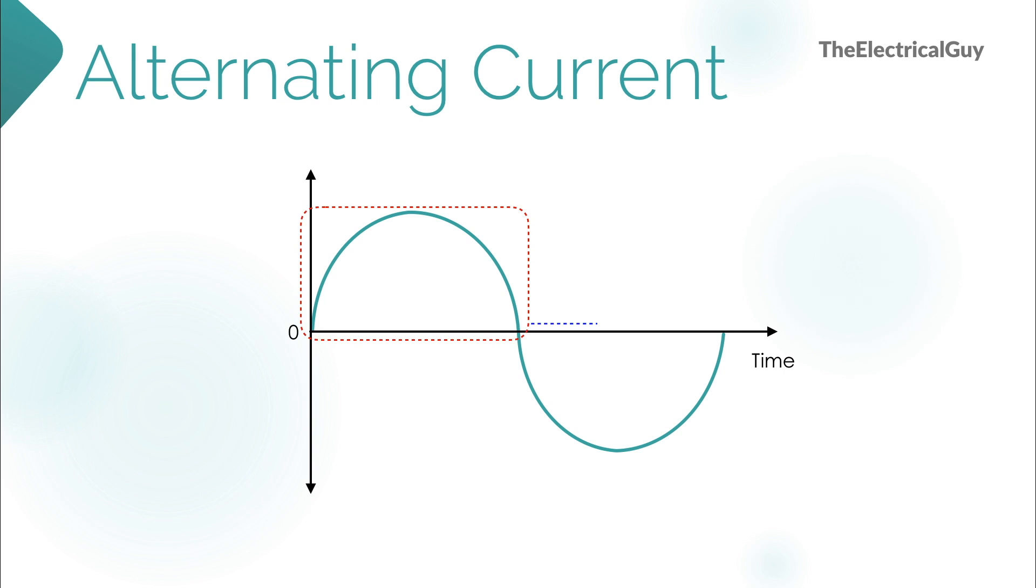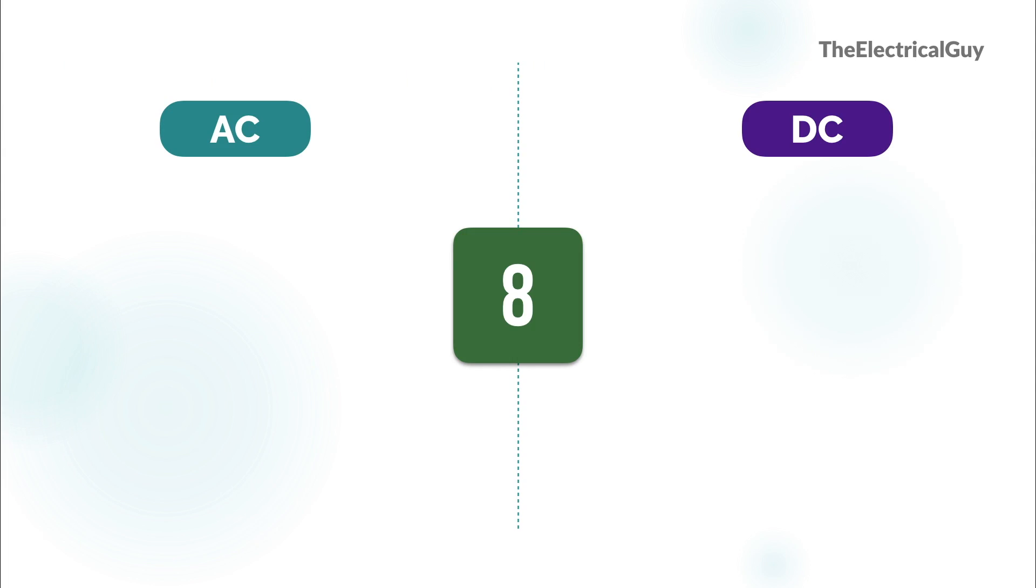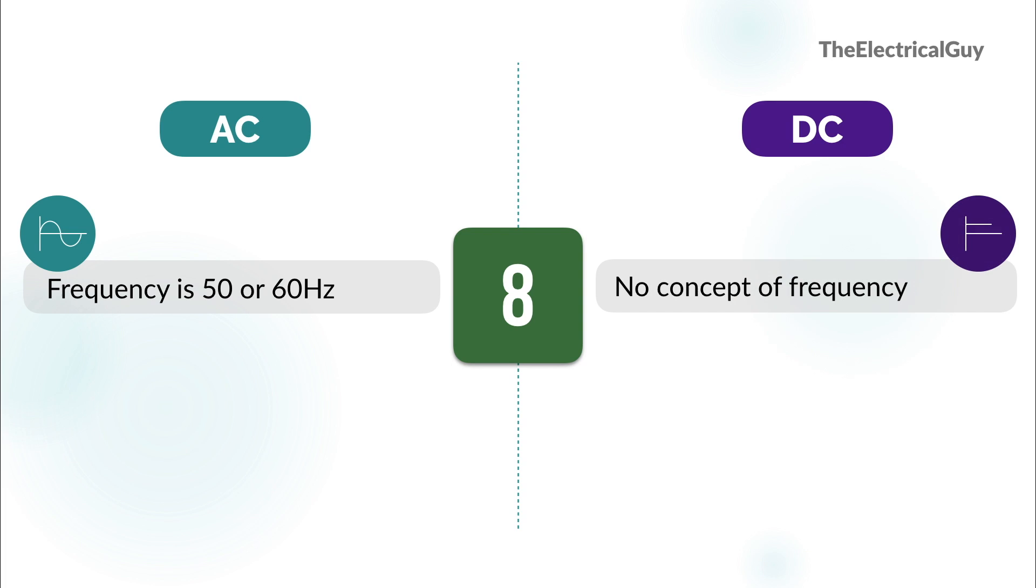If you observe the waveform of AC you will find that there is one set of positive values and one set of negative values. If you combine these two sets it becomes a cycle and number of such cycles that occurs in one second is called as frequency. In AC it is generally 50 or 60. In DC there is no concept called as frequency as the waveform does not change the direction. So the eighth point would be frequency of AC is 50 or 60 Hertz. Hertz is the unit of frequency. Whereas in DC there is no concept called as frequency. These are the few differences between AC and DC.